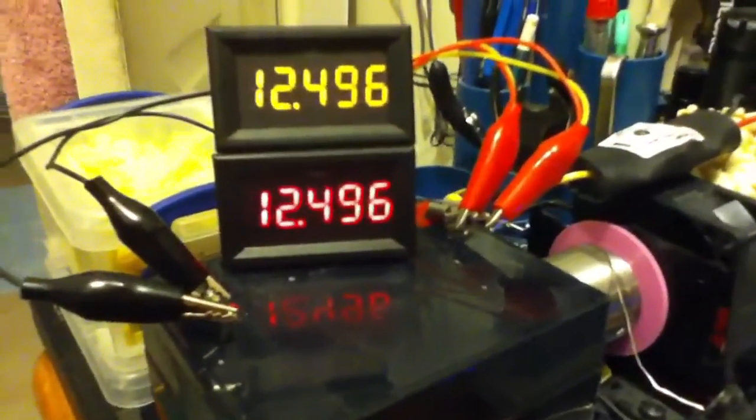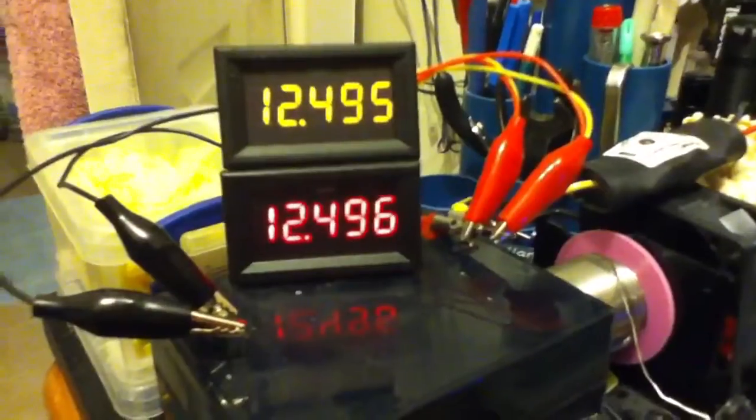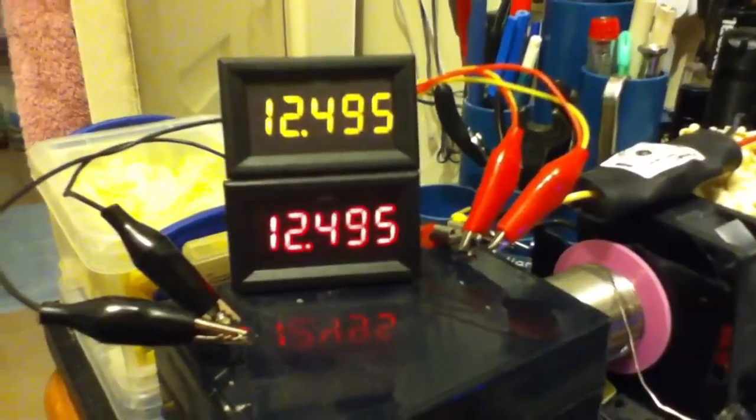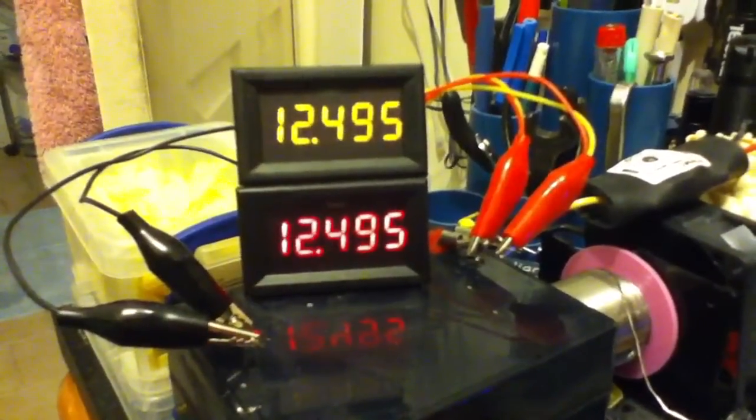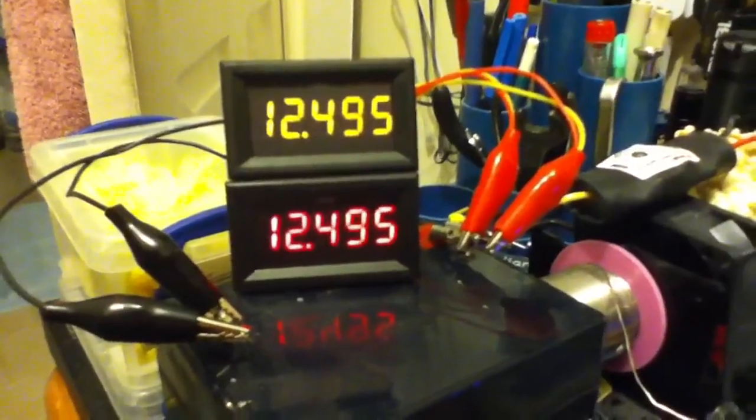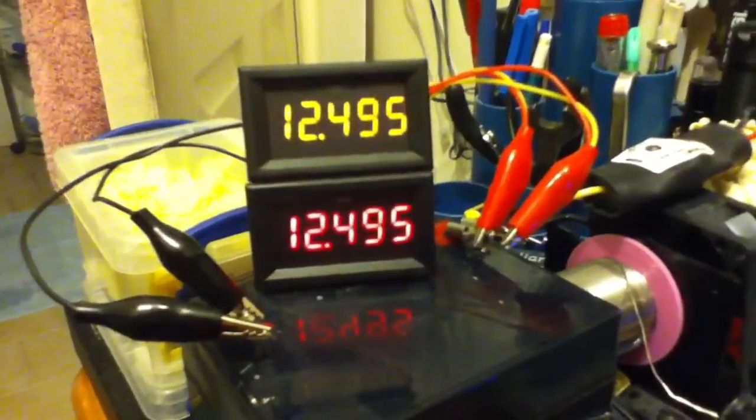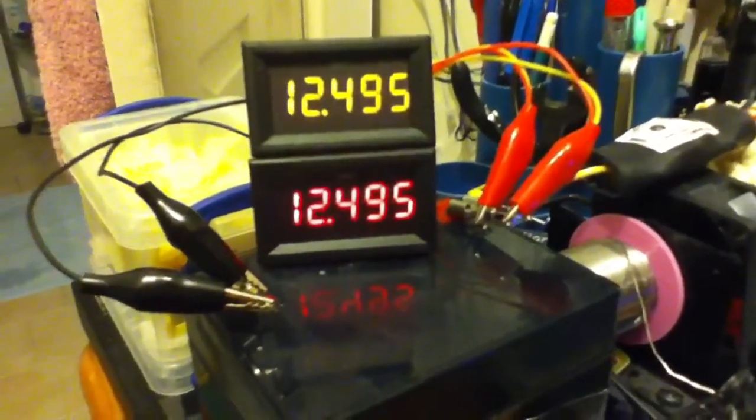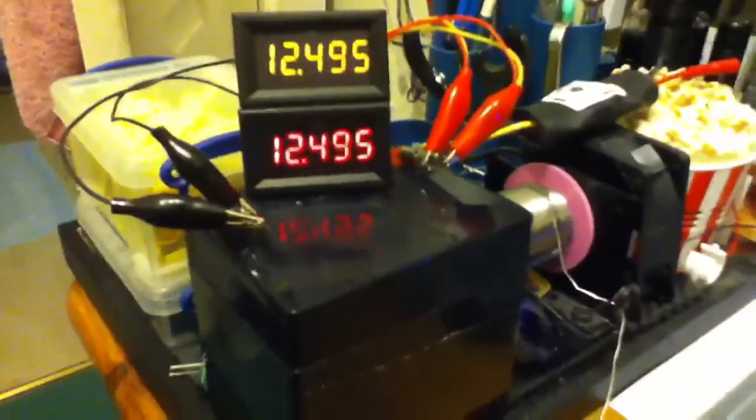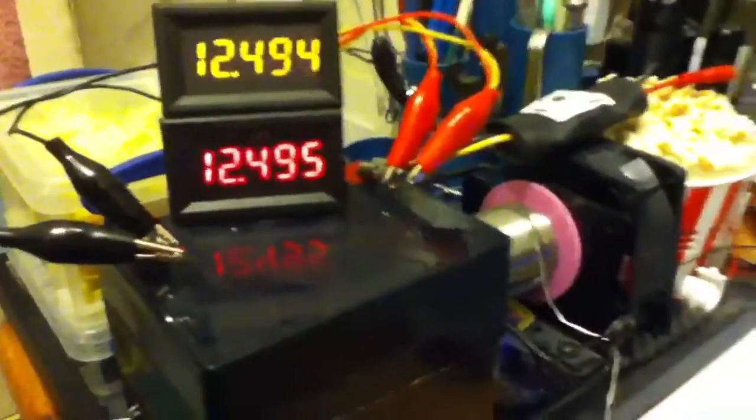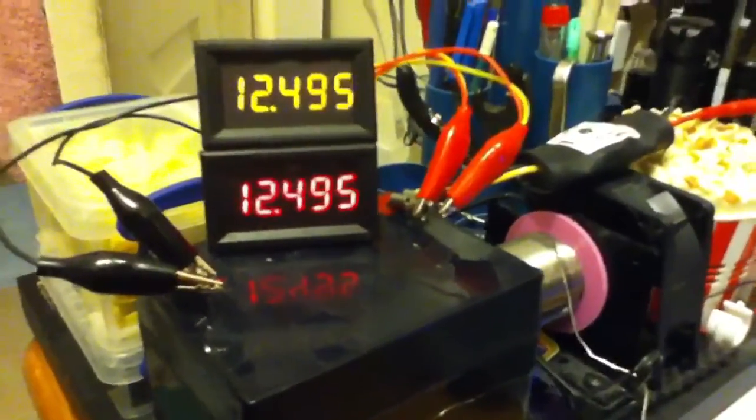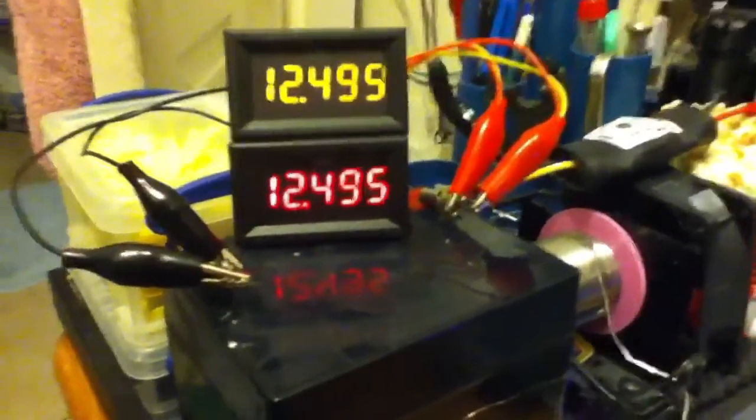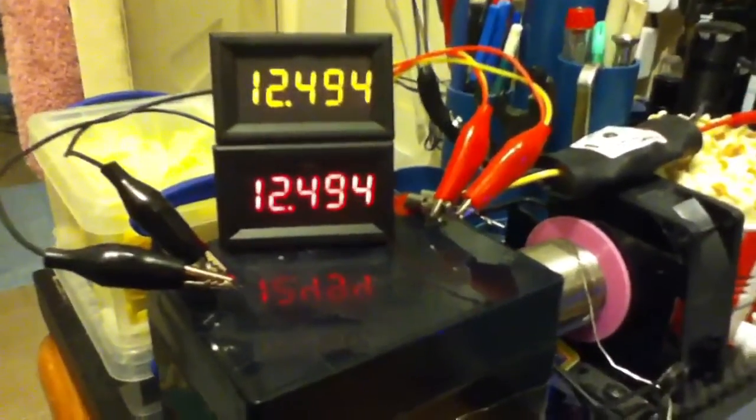A precise but not terribly expensive voltmeter with three decimal places that covers the 12 to 15 volt range, which is the range I'm interested in because of working with lead-acid batteries and solar panels. So I'm quite happy with that, that looks very good.